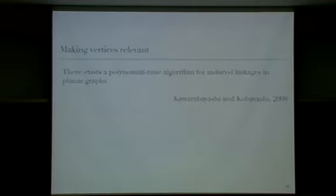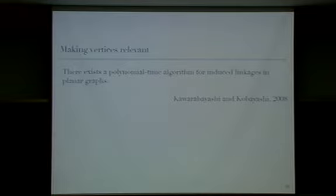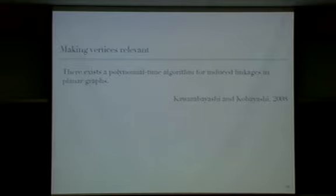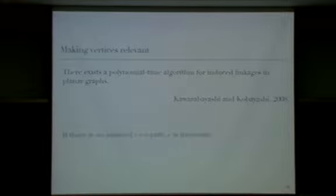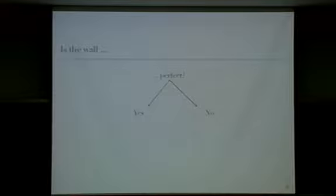We start by making all vertices relevant: if there is no induced path from S to T using a given vertex, we can delete it, since it will never belong to any odd induced path. This preprocessing is possible in planar graphs because there is a polynomial-time algorithm for the induced linkage problem — finding vertex-disjoint paths that are mutually induced.